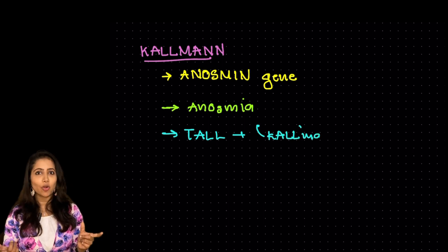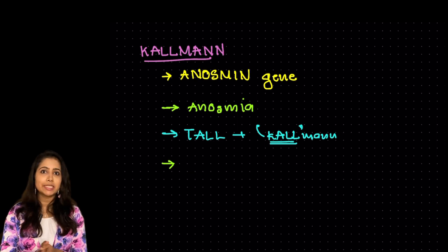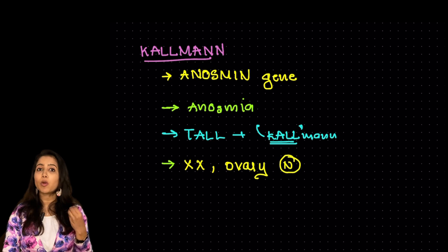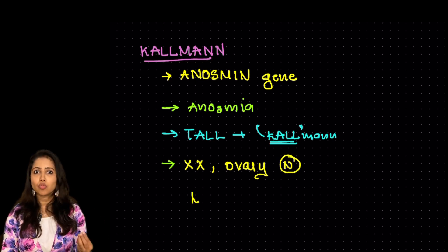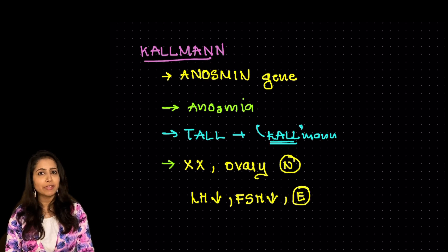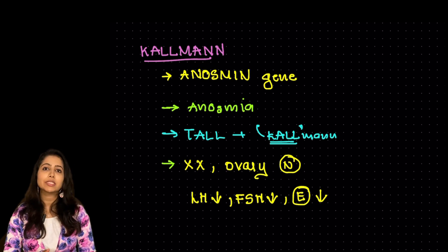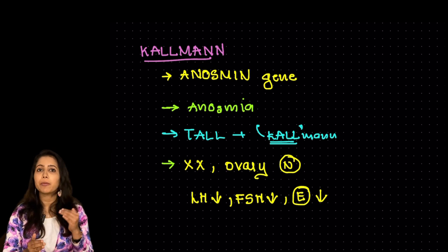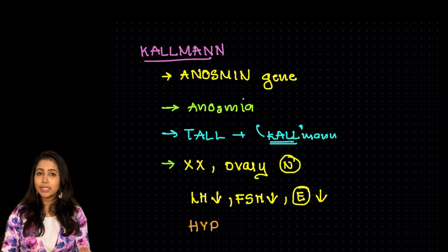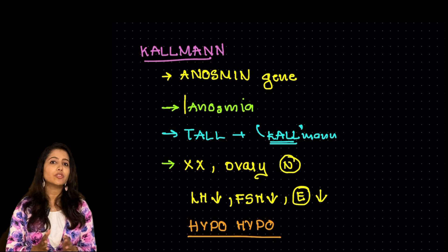These women are typically tall. Kal tall. So these women are usually tall. The karyotyping is that of a female that is XX. The gonads ovaries are normal as it's a problem with the hypothalamus. So all the gonadotropin releasing hormones as well as the LH FSH is going to be low. Subsequently the level of estrogen is going to be low in this that is a hypo-hypo state. Hypogonadotropin, hypogonadism. Along with that anosmia is typical in this and the females have a normal to tall stature.